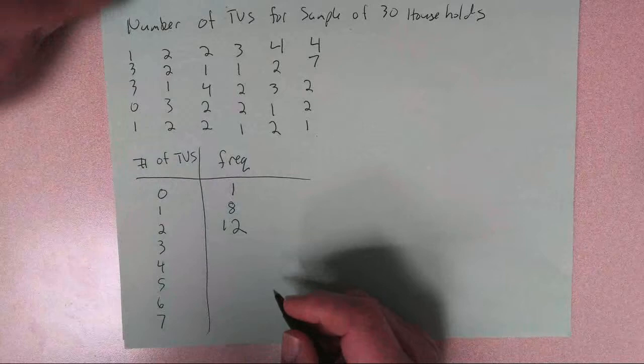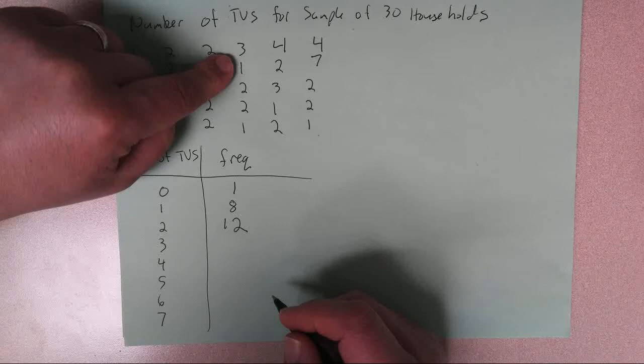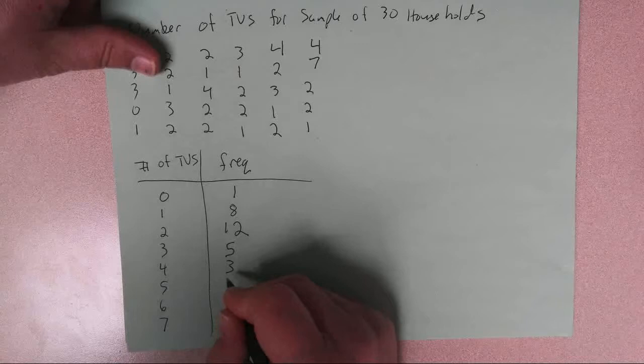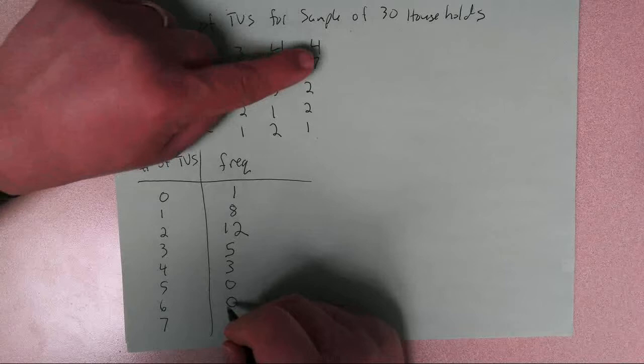And then for 3, 1, 2, 3, 4, 5. So there would be 5 here. 4 TVs, let's see, I got 1, 2, 3. There's 3. And then I don't see any for 5, and I don't see any for 6. And then there's the 1 that has 7 TVs.